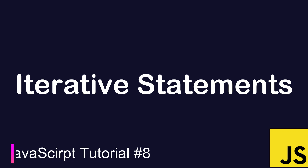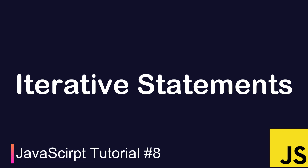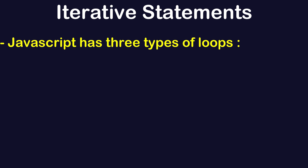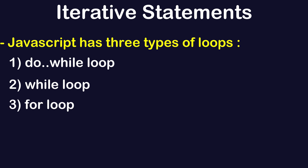In this section we are going to learn about iterative statements — this is the second part of control statements. In previous sections we have already gone through conditional statements. Now we are going to learn the various loops we have in JavaScript. JavaScript has three types of loops: do-while loop, while loop, and for loop. They can be used to achieve the same thing with minor syntax changes.